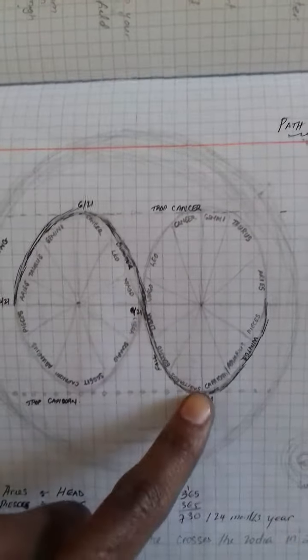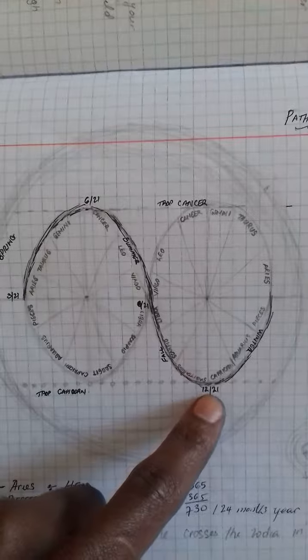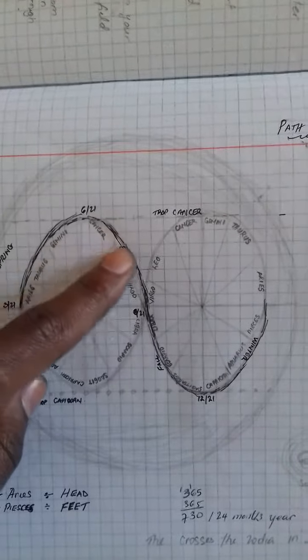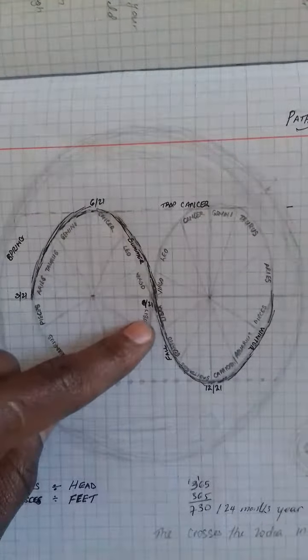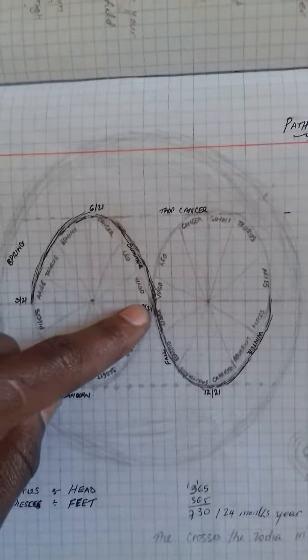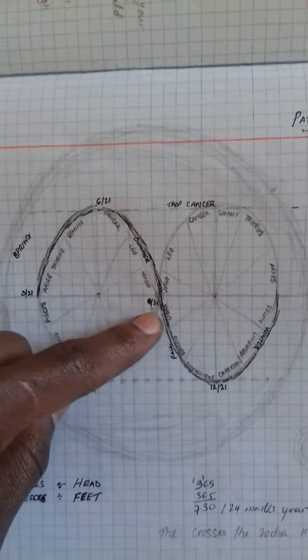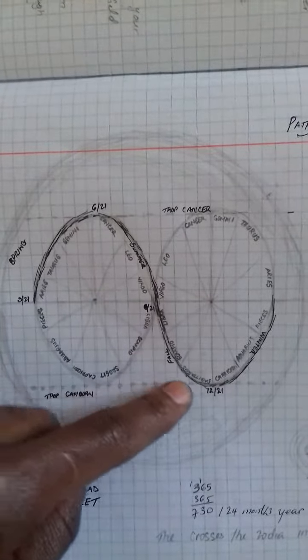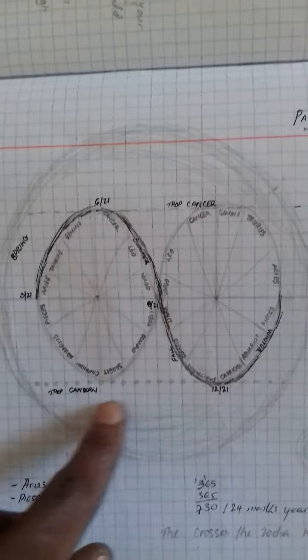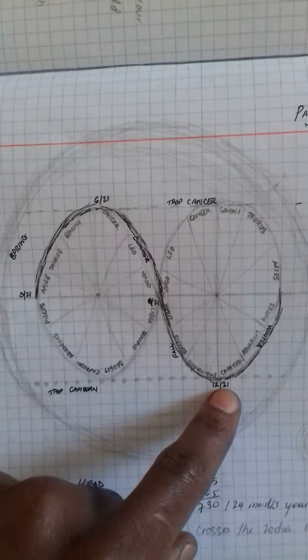So as you know, we're in Capricorn season since the 21st of the 12th, and this is when the Sun has been falling from the 21st of September when it was in Libra, and it is falling down to the lowest point in Tropic of Capricorn on the 21st of December.